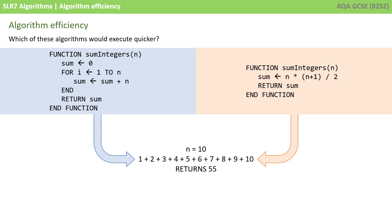On the screen, we have two algorithms — two functions called sumIntegers — and they both take in a single parameter n. If you called either of these functions with the value 10, then both of them would perform the calculation 1 plus 2 plus 3 all the way up to 10, and they'd return 55. Likewise, if you supplied the integer 100, it would sum up the numbers 1 through to 100. The point to note here is that both of these algorithms do exactly the same thing — they return the combination of all the numbers added together.